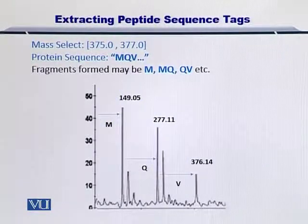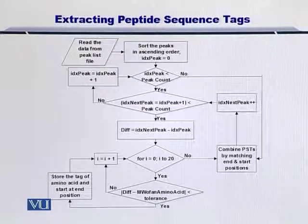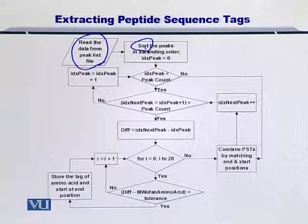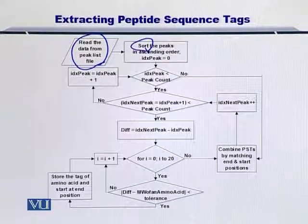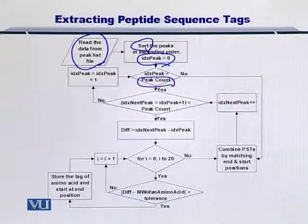Now let's take a look at the flowchart. If you are given a set of peaks from the mass spectrum, then you can process them in this chronology. To begin with, you start reading the peak list from the file. You sort the peaks in order for the larger peaks to be at the end and the smaller peaks to be at the start of the peak list. You define an index for each peak and you initialize it to zero. And peak count is the total number of peaks in your peak list.